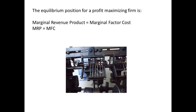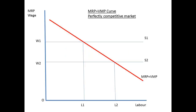The equilibrium position for a profit-maximising firm is where marginal revenue product equals marginal factor cost: MRP equals MFC. The MRP curve is shown for a firm in a perfectly competitive market. With a perfectly elastic supply for labour, S1, the market wage is shown by OW1, where the MRP curve intersects the supply curve. Now assume the supply curve falls to S2: the wage will fall to OW2, and the result is an increase in labour employed, rising from OL1 to OL2.